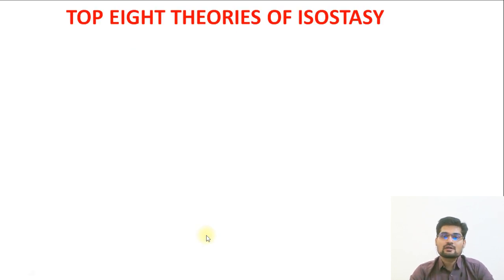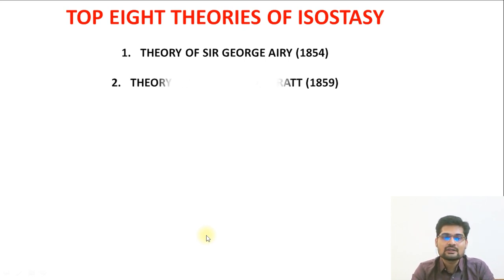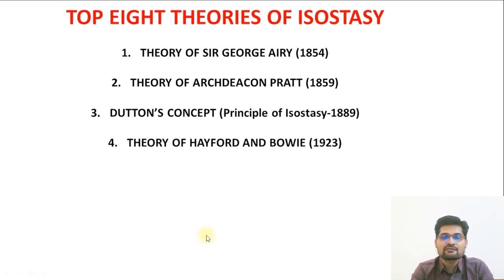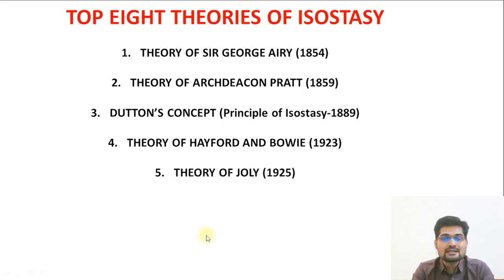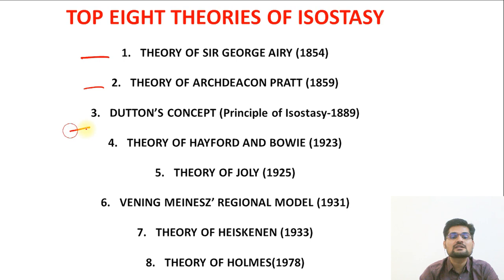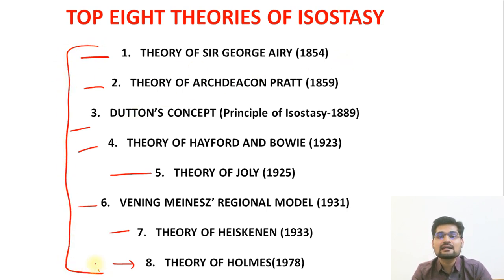There are eight important theories related to the isostasy concept: the theory of Sir George Airy in 1854, Pratt in 1859, Dutton's principle of isostasy in 1889, Hayford and Bowie in the 1920s, Jolly at the same time, Vening Meinesz's regional flexural model, Heiskanen's theory, and finally the theory of Holmes. Let's learn about each one.